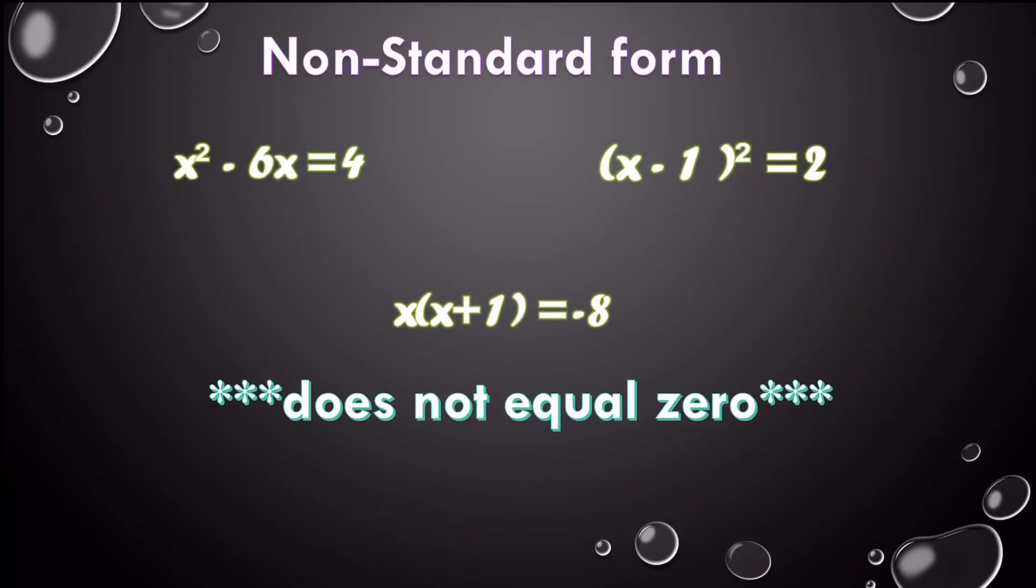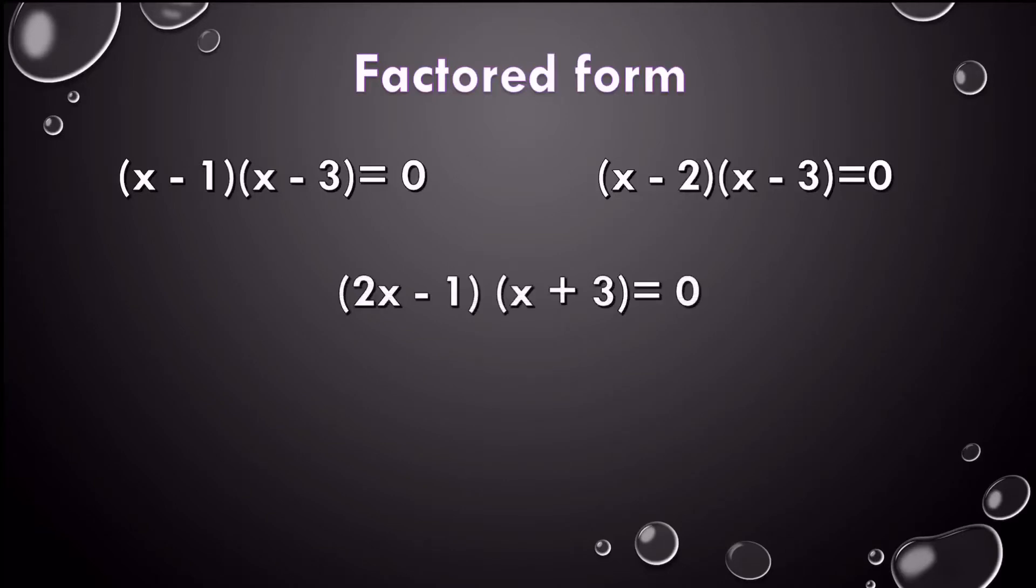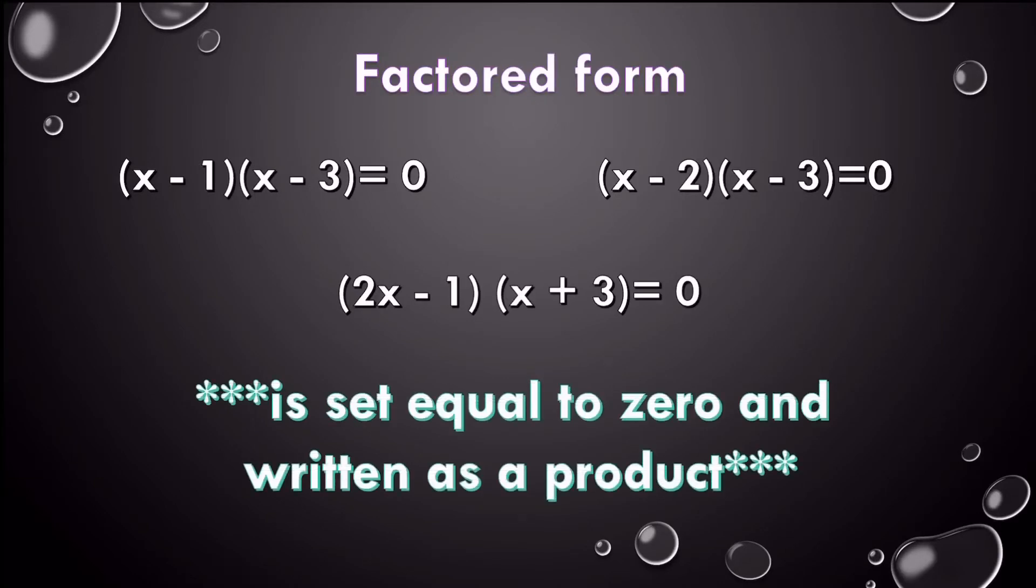Now another form, which you might've seen but not understood what it was, is called factored form. And it's exactly what it sounds like - factors. It's when I have things being multiplied by each other. Yes, these factors just happen to be binomials, but it's set equal to zero and it's written as a product. So that's the important information you need to get from factored form. It's set equal to zero and written as a product, meaning you're multiplying.